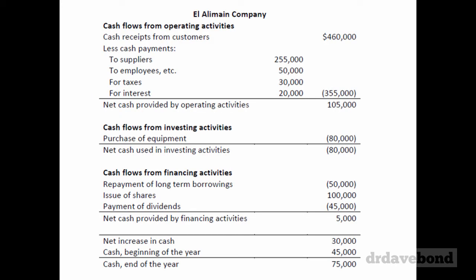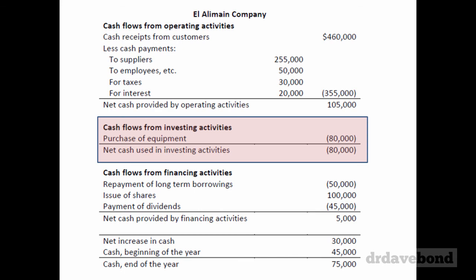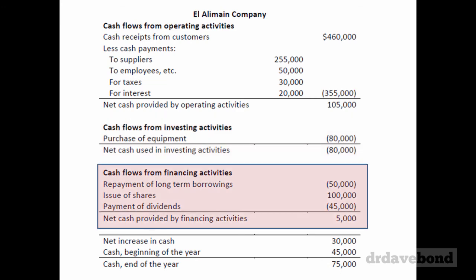When we wrap it all together, this is what the final statement looks like. Cash flows from operating activities — note that cash payments to suppliers and employees, when you add the $255,000 and the $50,000, is the same total as what we worked out, just split slightly differently. Cash flows from operations total $105,000. Cash flows from investing activities is the $80,000 outflow from the purchase of equipment. Cash flows from financing activities is a $5,000 net cash inflow.